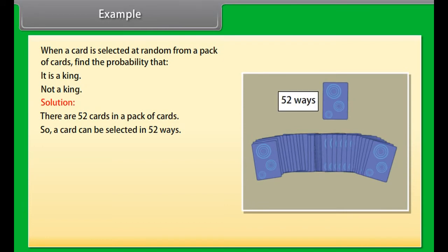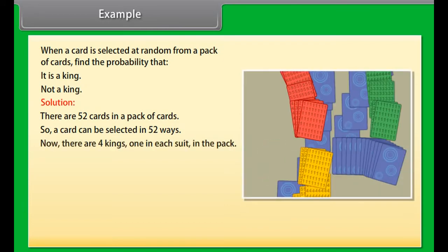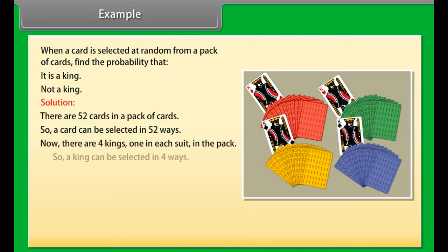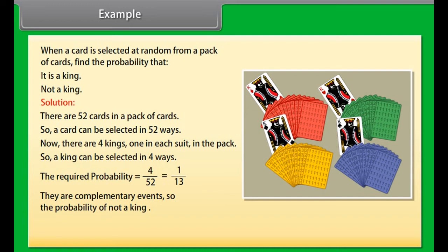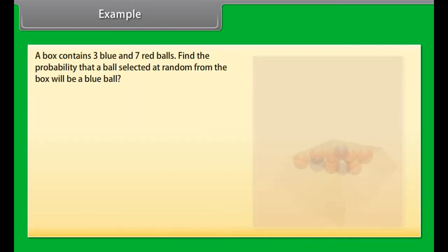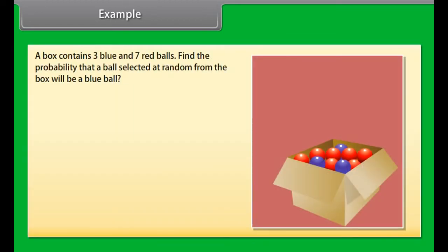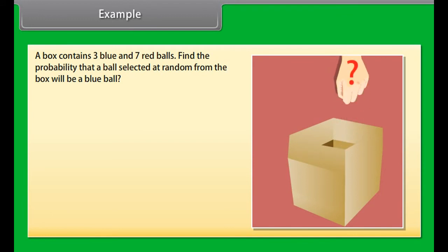When a card is selected at random from a pack of cards, find the probability that it is a king or not a king. Solution: there are 52 cards in the pack. So a card can be selected in 52 ways. Now, there are 4 kings, one in each suit, in the pack. So a king can be selected in 4 ways. The required probability is equal to 4 by 52, which equals 1 by 13. They are complementary events. So, the probability of not a king is equal to 1 minus 1 upon 13, which equals 12 by 13.